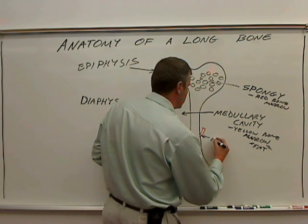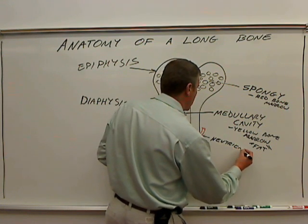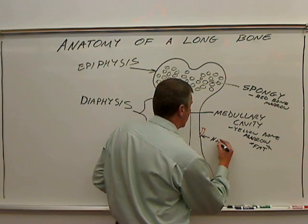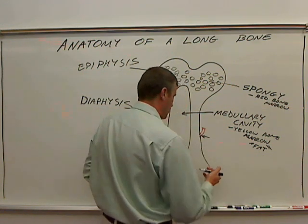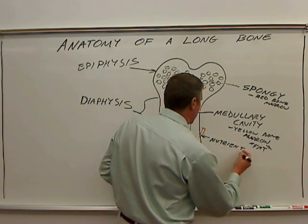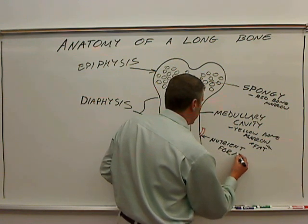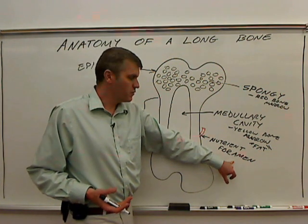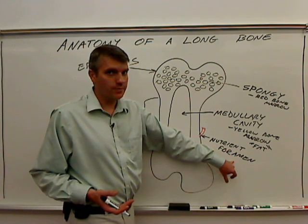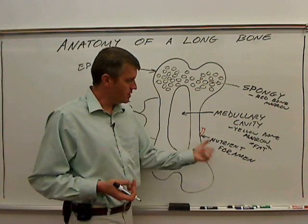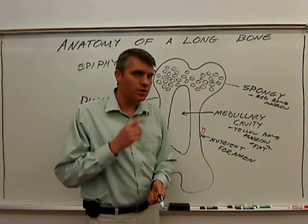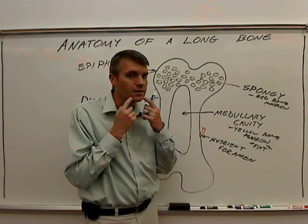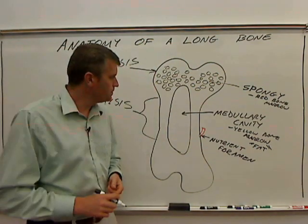These are called nutrient foramina. Foramen is a word you need to know — it just means a hole in a bone. Sometimes these foramina are quite large; for example, the foramen magnum at the base of the skull is where the spinal cord passes through. In this case, nutrient foramina are pretty small. One example: on the mandible, right up front toward the chin, you'll find the mandibular foramen — two holes on the sides of the jaw where blood vessels and nerves go in.